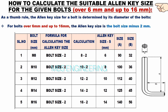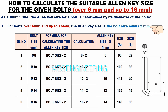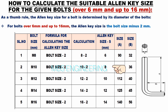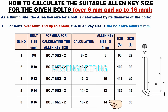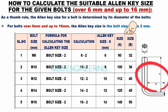Based on the given data and calculation, M8 bolt allen key size is 6 mm. For M10 bolts, the allen key size is 8 mm. For M12 bolts, the allen key size is 10 mm. For M14 bolts, the allen key size is 12 mm. For M16 bolts, the allen key size is 14 mm. Please also refer to the standard dimensions A and B for the allen keys.